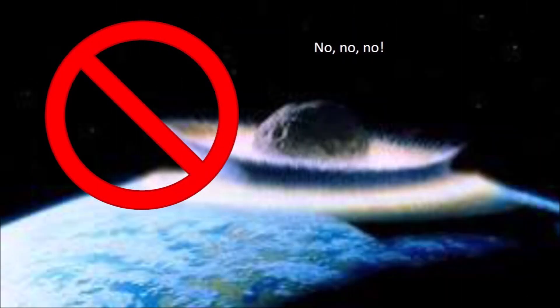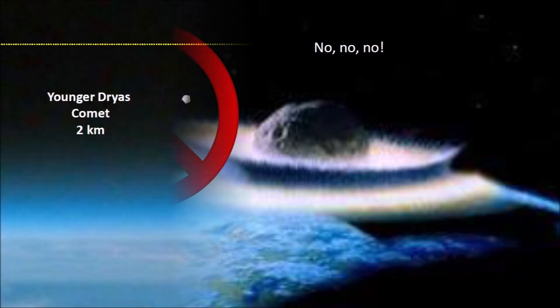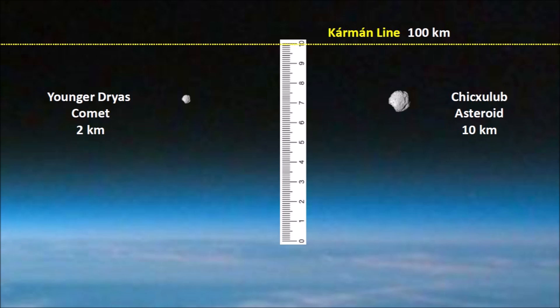Many artists depict extinction events with massive projectiles striking the earth, but this is completely wrong. To put things in perspective, the Chicxulub asteroid that measured 10 kilometers in diameter was only one tenth of the distance from the surface of the earth to the Kármán line that denotes the end of the atmosphere. The Younger Dryas comet, with a diameter of 2 kilometers, was just a tiny speck compared to the size of the earth. If it had hit solid ground, it would have made a crater only 12 to 15 kilometers in diameter with a kill radius of less than 500 kilometers. But by hitting ice, which has one third the density of rock, the icy ejecta went much farther and had a kill radius of about 1,500 kilometers.